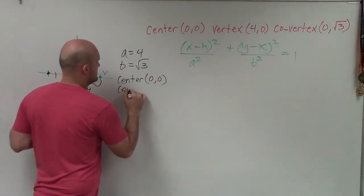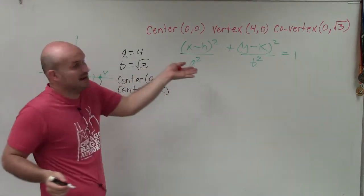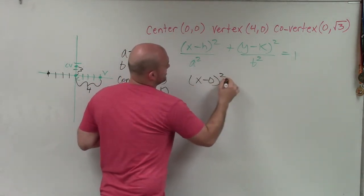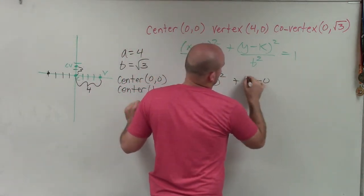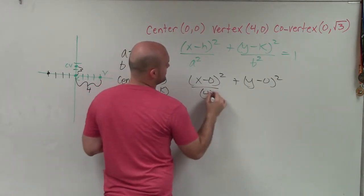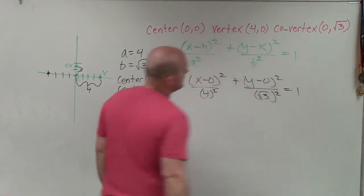Remember, the center is (h,k). Since I have (0,0), I'll plug them in. Then let's plug in a² = 4² and b² = (√3)², giving us our equation equal to 1.